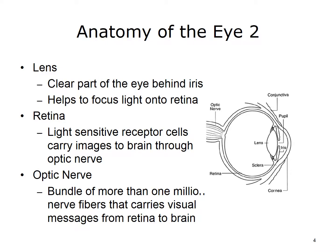The lens is the clear part of the eye behind the iris. It helps to focus the light onto the retina. The retina contains the light-sensitive receptor cells that carry images to the brain through the optic nerve. The optic nerve is a bundle of more than one million nerve fibers that carry visual messages from the retina to the brain.